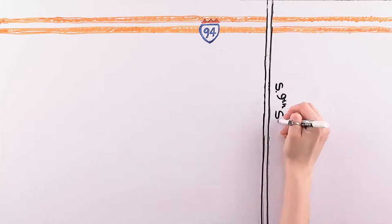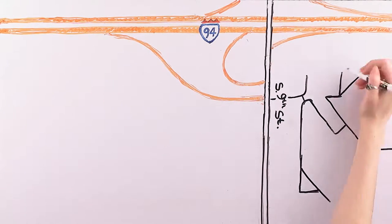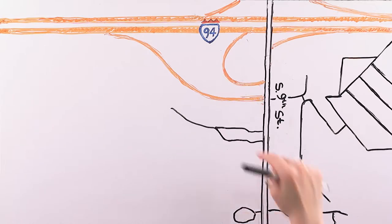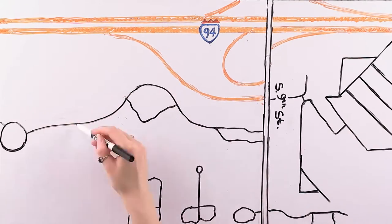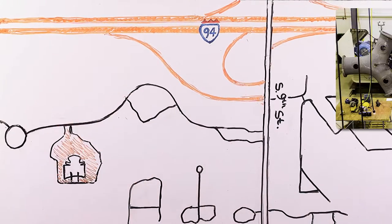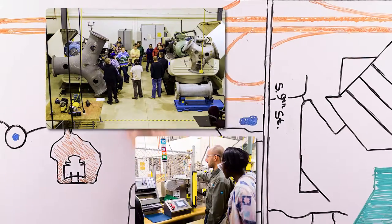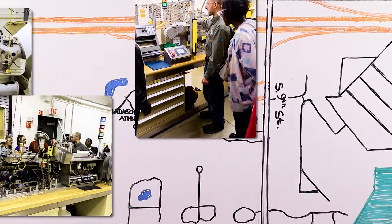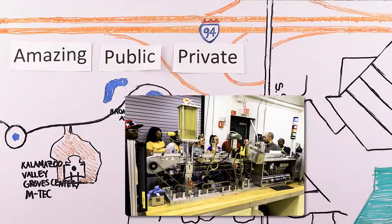To meet the rapidly changing employment training needs in West Michigan, an amazing public and private partnership was created to fund the construction of an M-Tech facility on The Groves campus. This is where the college offers fast-track training programs that are designed with input from local employers.